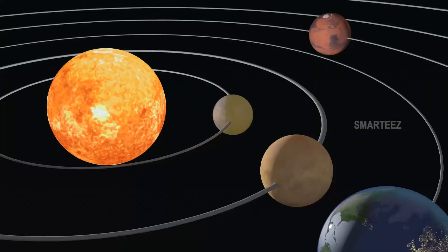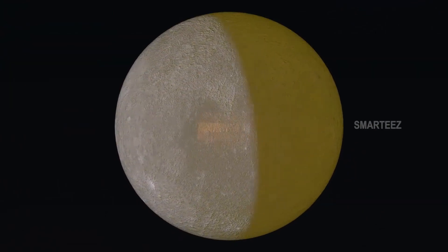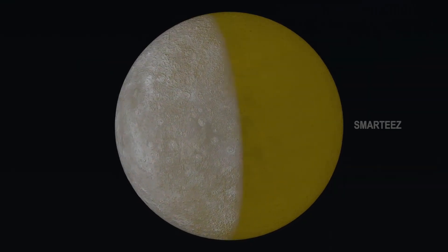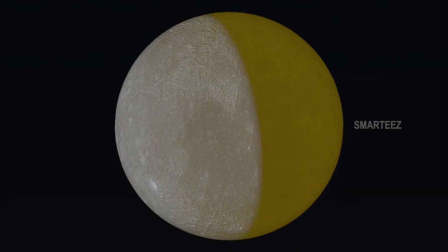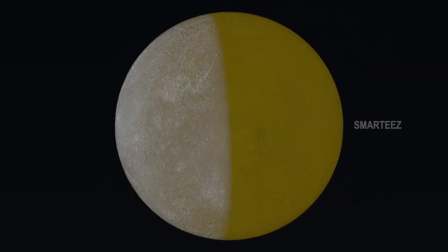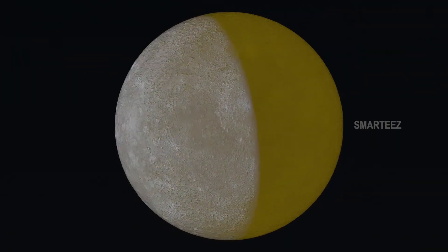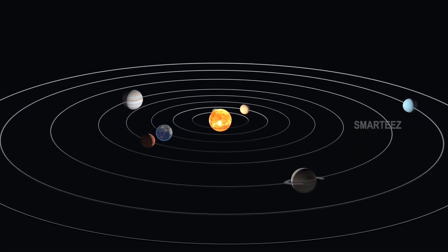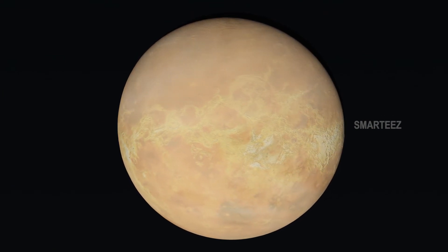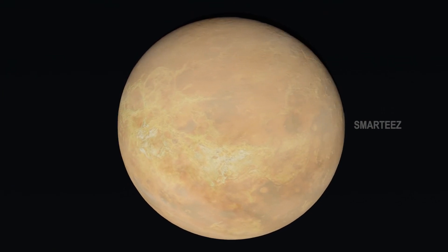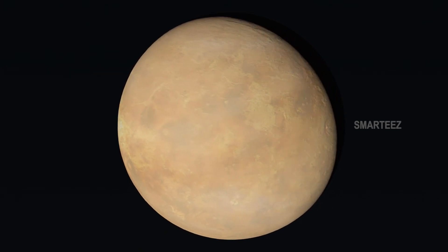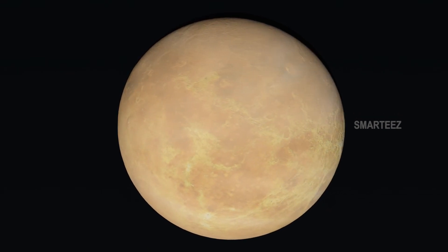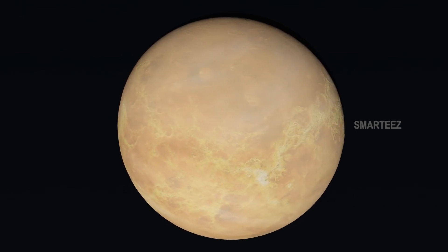The planet closest to the sun is Mercury. Mercury is the first planet in the solar system. It's the smallest planet and its surface is rocky. It's very hot in the day and very cold at night because it does not have an atmosphere. That was Mercury. The second planet is Venus. This is the hottest planet in the solar system, but it doesn't get cold at night because it has a thick atmosphere. It's so bright and you can see it in the sky both in the morning and evening. That's Venus.